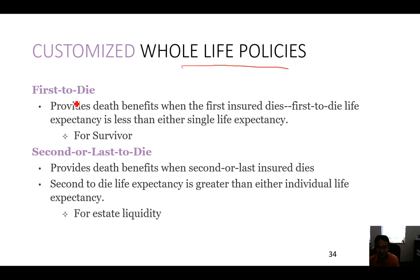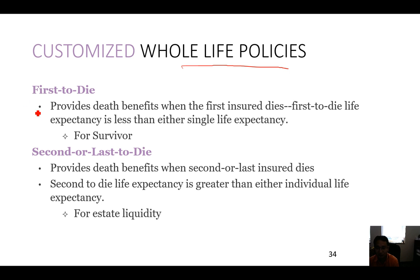The first-to-die provision provides a death benefit when the first insured dies. First-to-die life expectancy is less than either single life expectancy. Basically, you have a spouse and you don't know which one will die first. So first-to-die means when the first one dies, it will pay out.